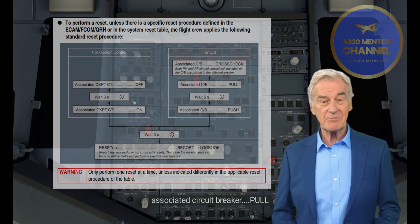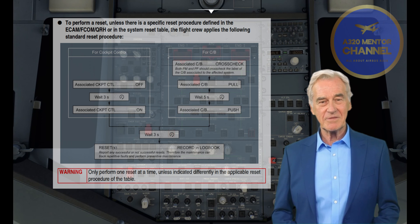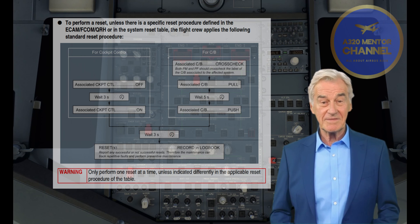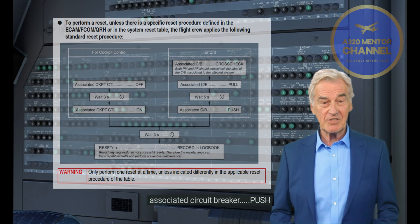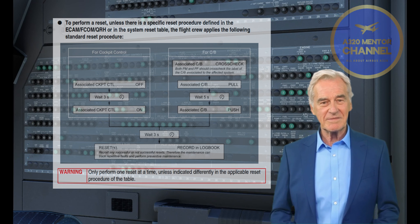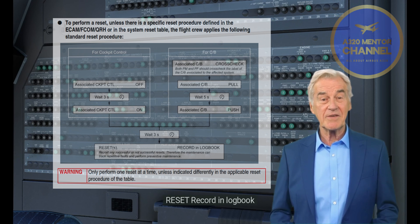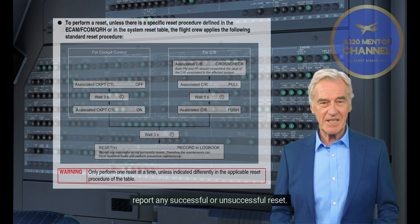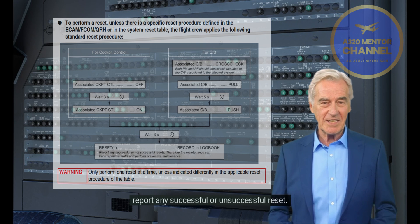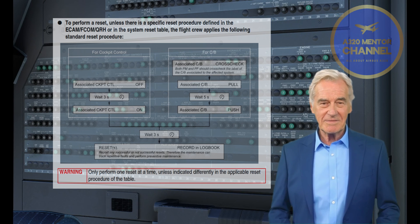Associated circuit breaker: pull, wait 5 seconds, associated circuit breaker push. Wait 3 seconds. Reset record in logbook — report any successful or unsuccessful reset.